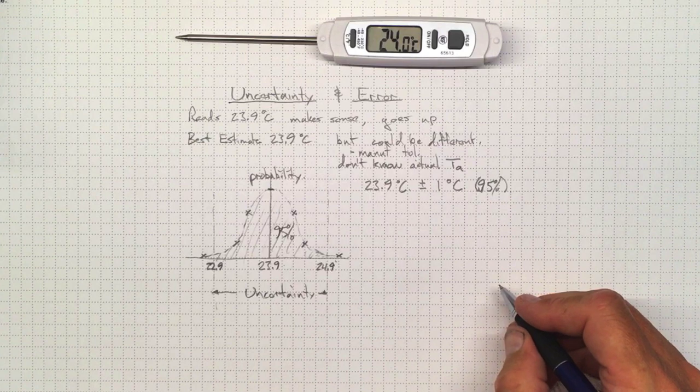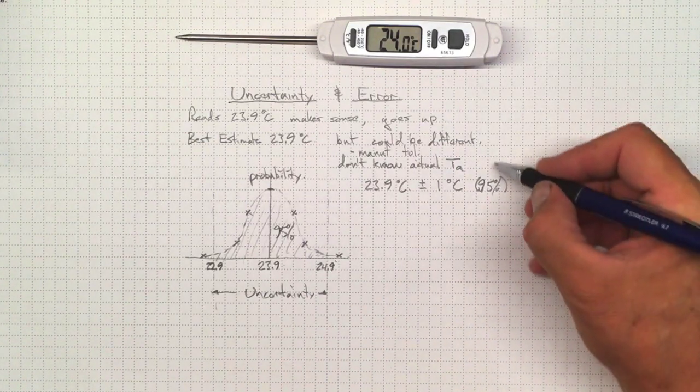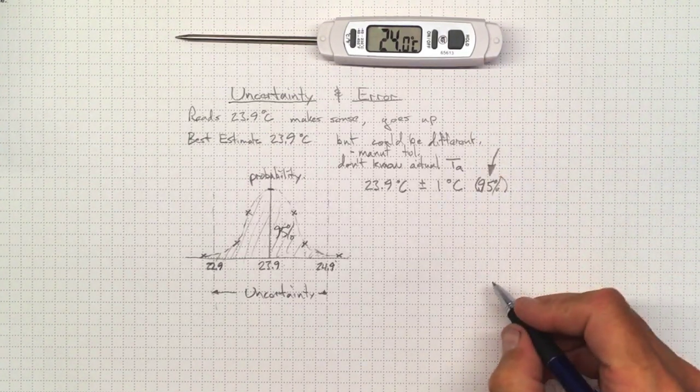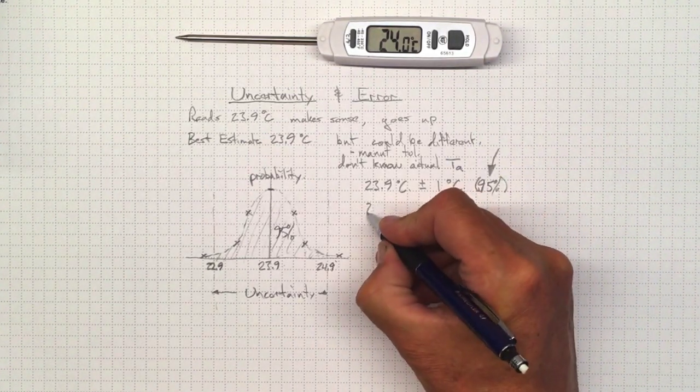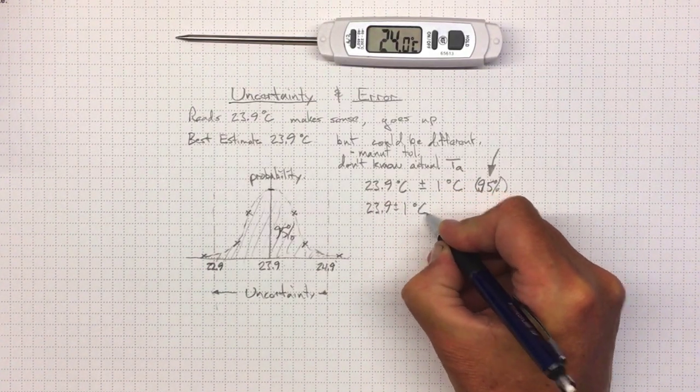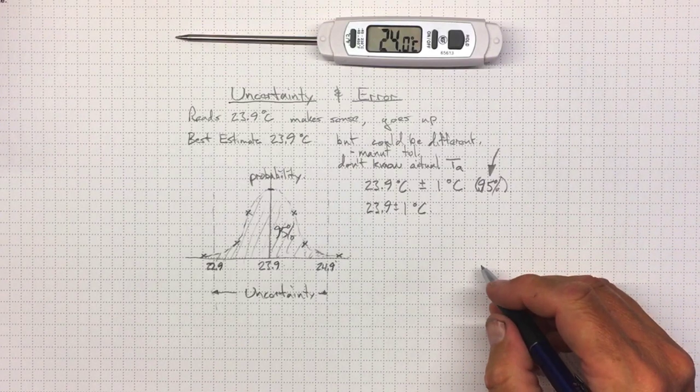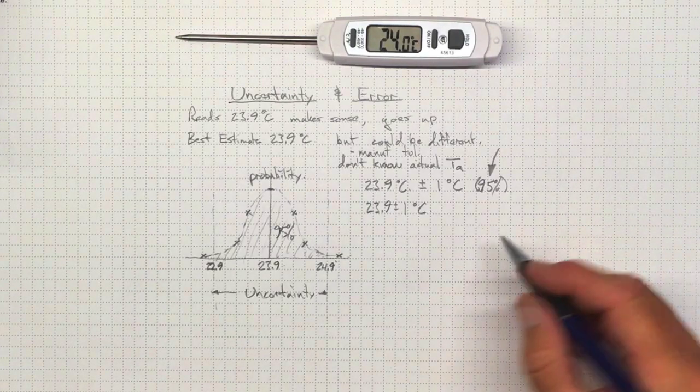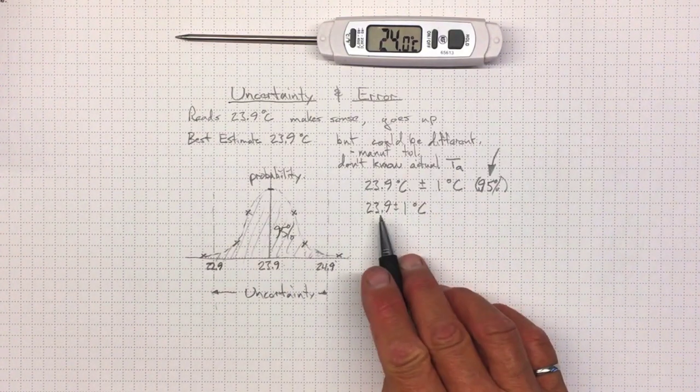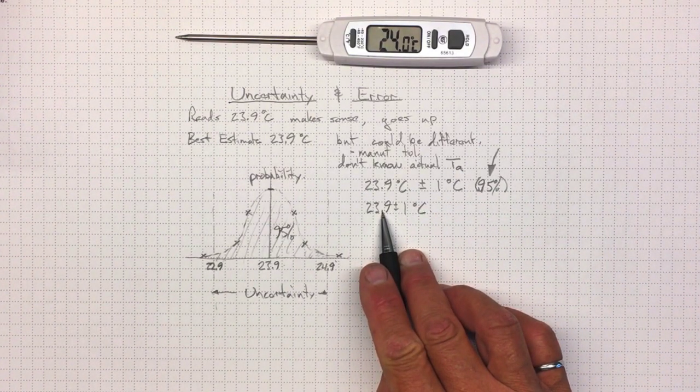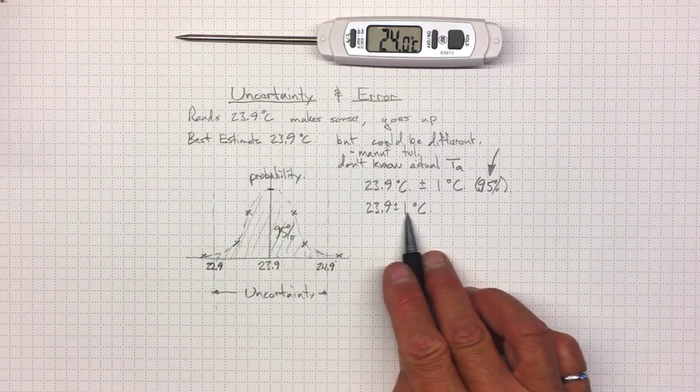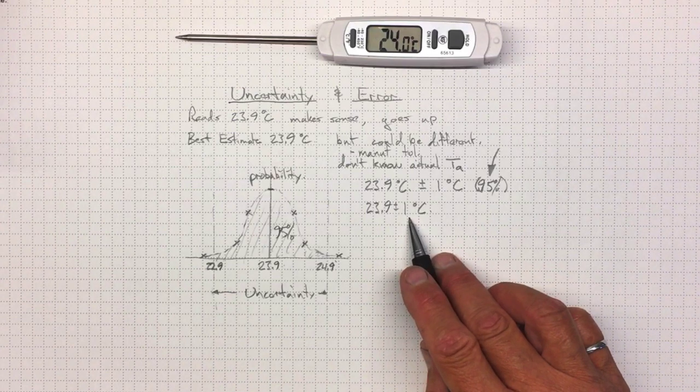And in this course and in most engineering measurement, we're going to use this 95% all the time. And as a result, what you'll see more commonly is just 23.9 plus minus 1 degree Celsius as an expression of what the actual temperature is. And this is an expression of our uncertainty. We don't know what the actual temperature is, but we think that it's 95% likely to be within 22.9 up to 24.9 based on our measurement of 23.9.